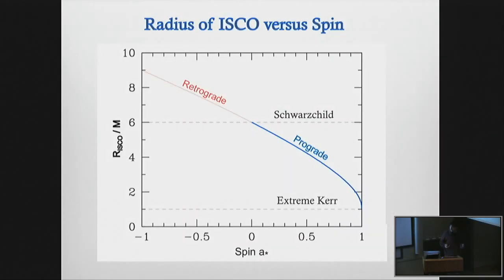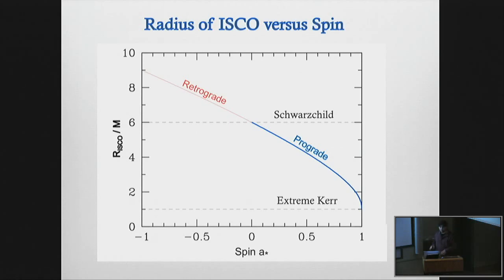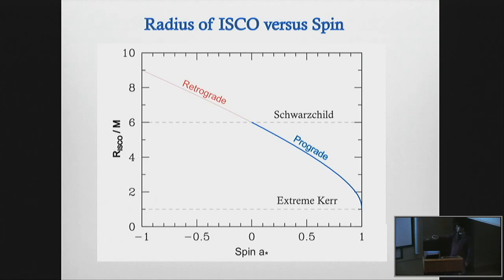This relationship between the spin and the ISCO radius is really what those of us in the business of measuring spin are trying to exploit. I'm going to speak principally about continuum fitting, but the reflection studies of spin use the same relationship. This is really the crux of our modern methods of measuring black hole spin. Varying spin from non-rotating to maximum prograde or maximum retrograde gives a factor of six or nine total variance in the inner disk radius.